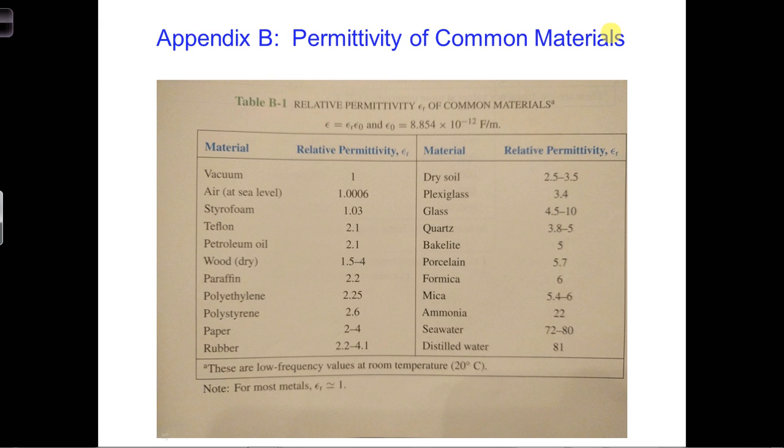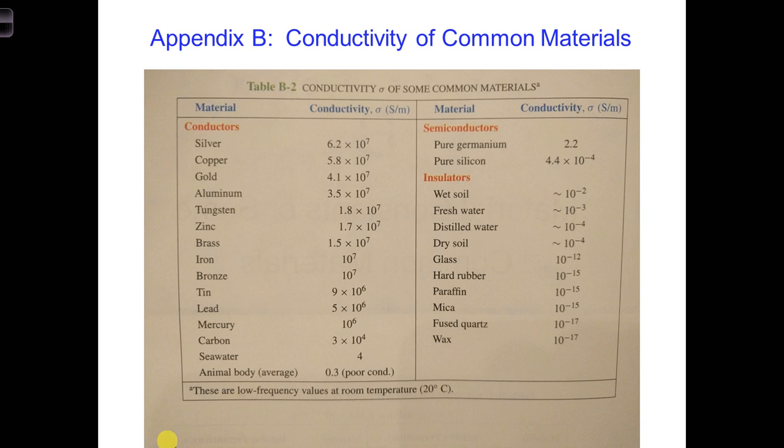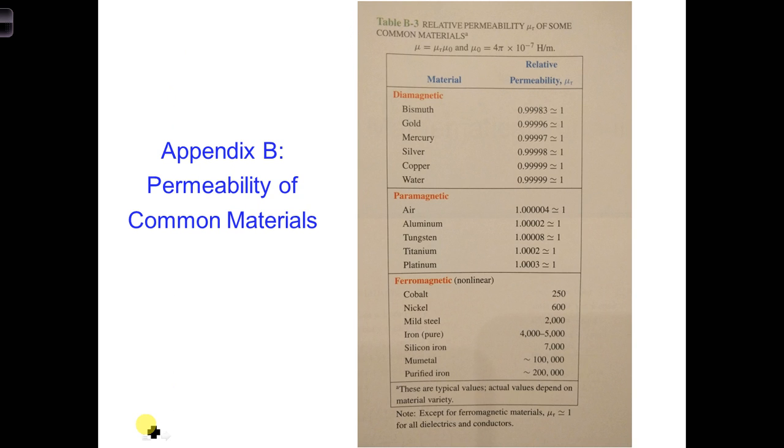Appendix B of your book provides parameters for common materials: the permittivity, the conductivity, and the permeability, which you can see here on the next couple slides. Conductivity and permeability.